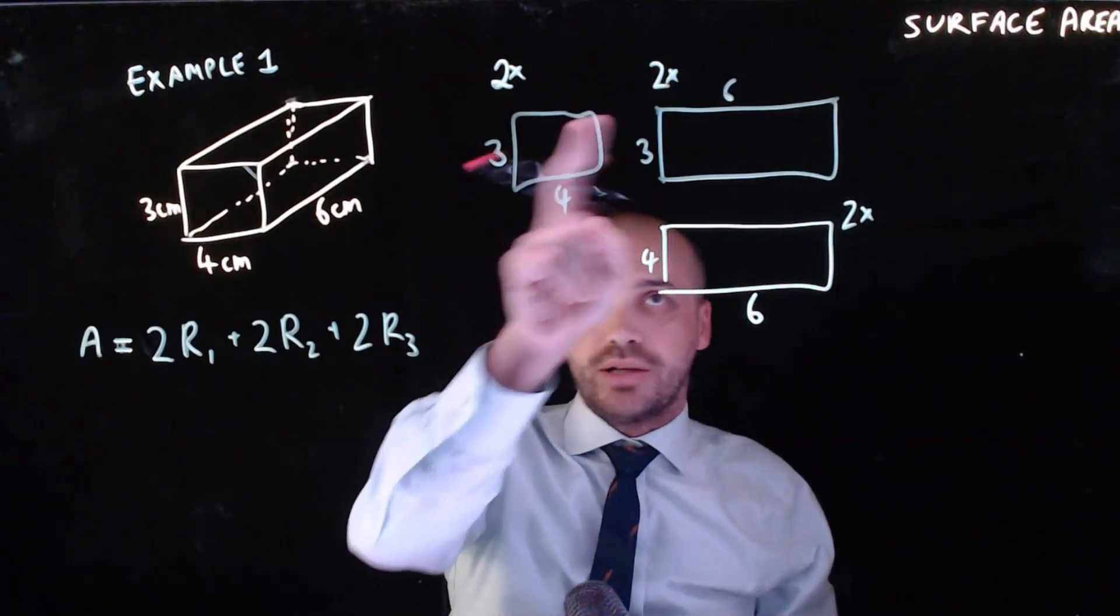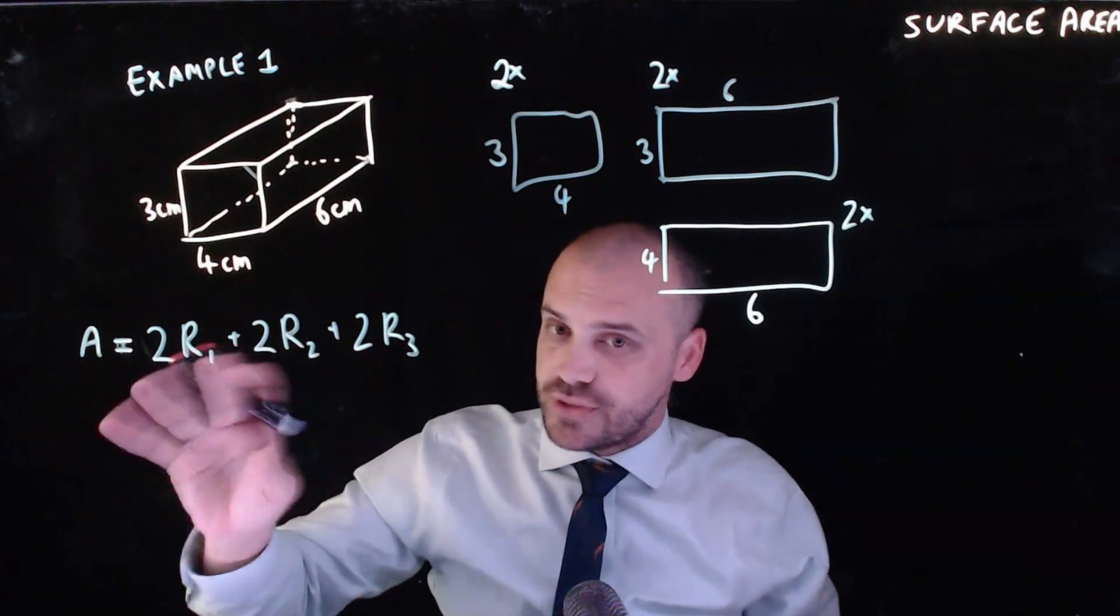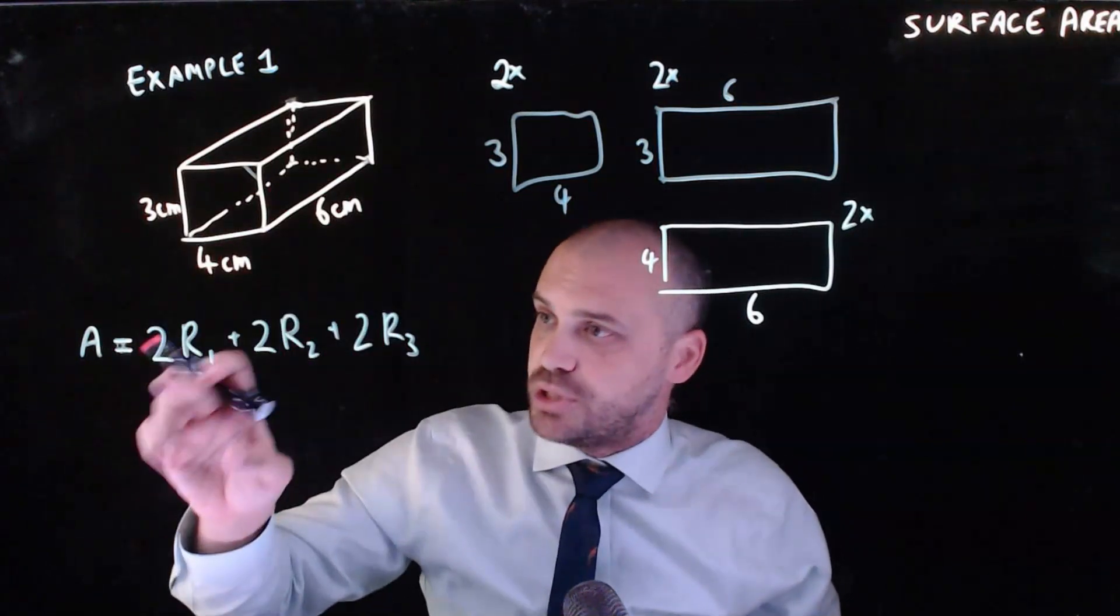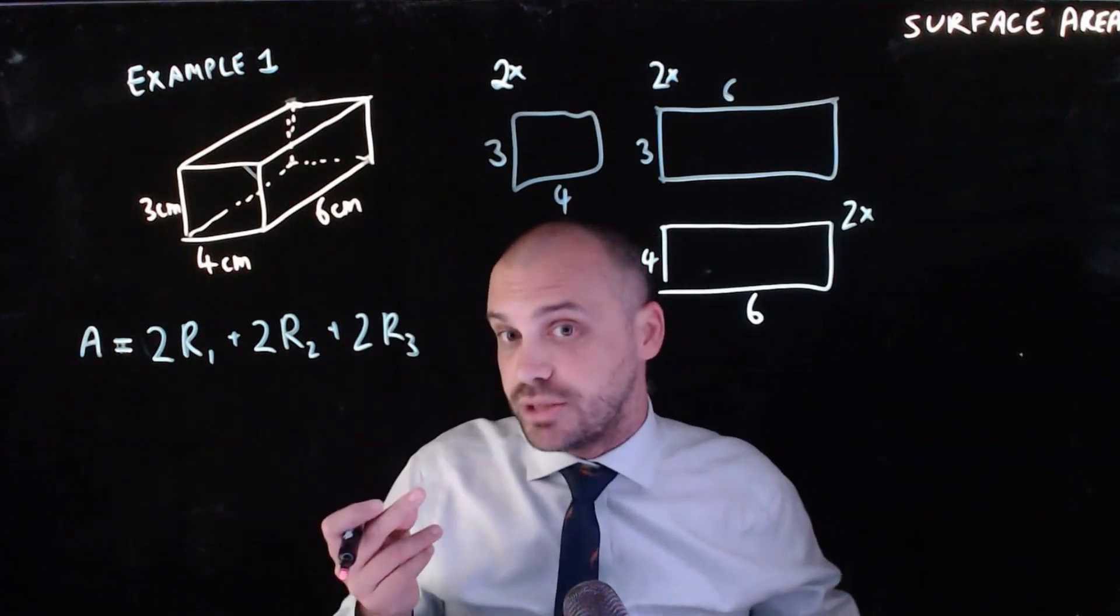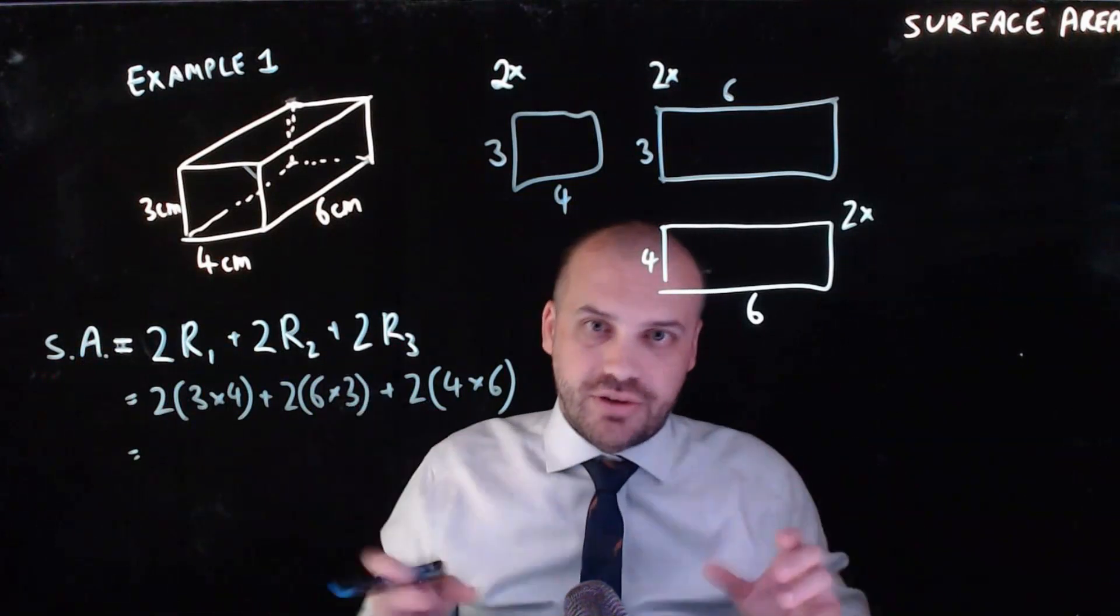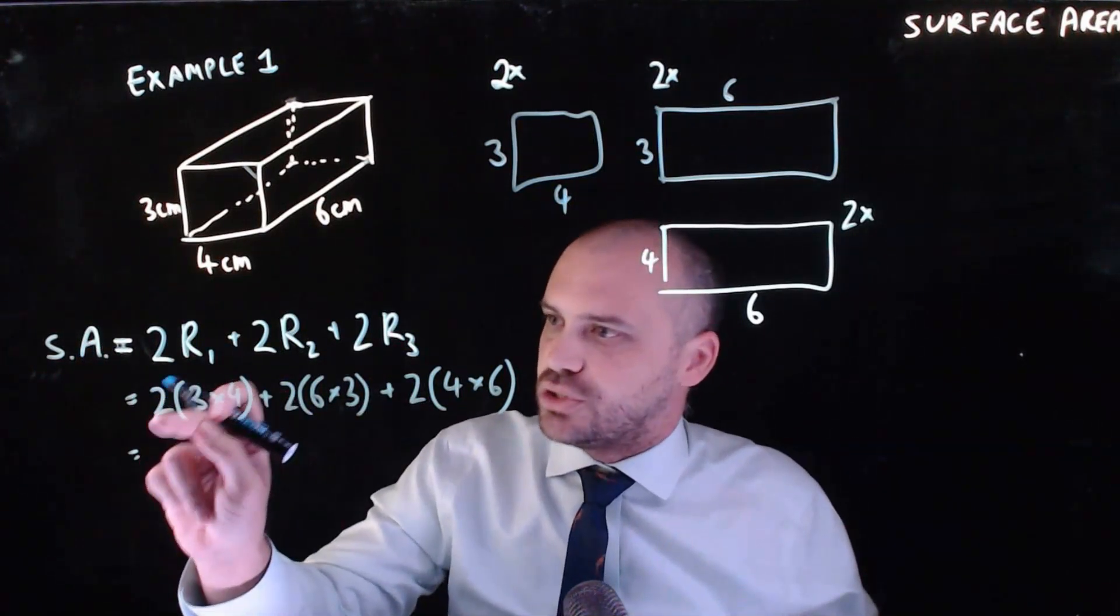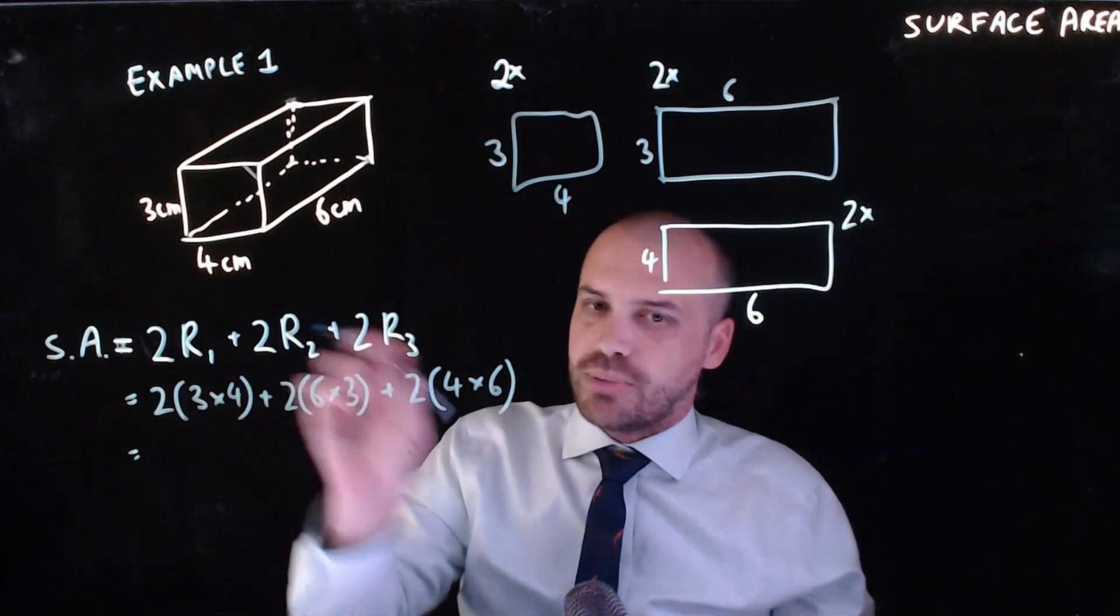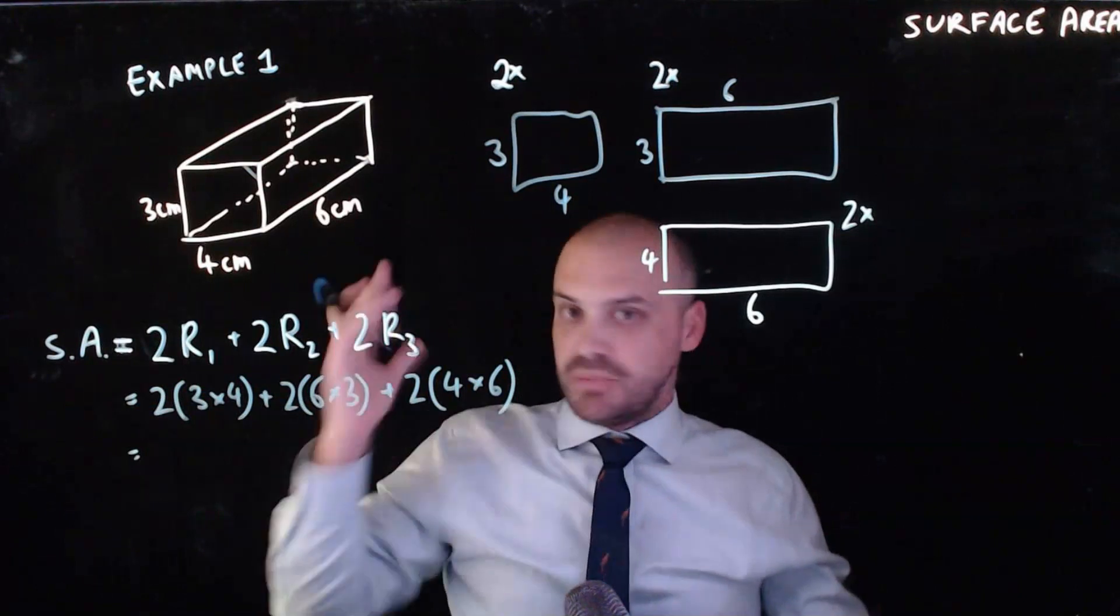If we called this rectangle one and this rectangle two and this rectangle three, our formula for the surface area of this object would be 2 times rectangle one plus 2 times rectangle two plus 2 times rectangle three. So I've just put in all of the numbers here. I also added an S here for surface area, not just area. The brackets aren't really that useful because I could have just written 2 times 3 times 4, but I'm putting them in there so you can see that's the rectangle and then we're going to multiply by two.